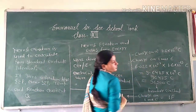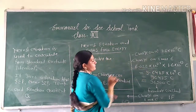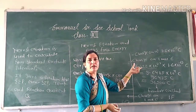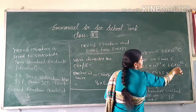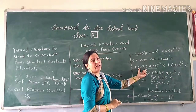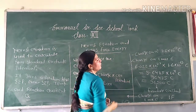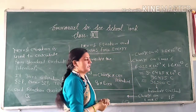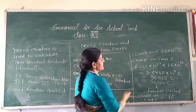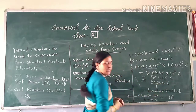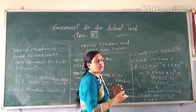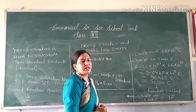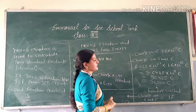So what is the charge on one mole of electrons? One mole of electrons: we multiply 1.6 × 10⁻¹⁹ coulombs by one mole of electrons — that is, by Avogadro's number. This gives us the charge on one mole of electrons, which is equal to 9.6485 × 10⁴ coulombs, which we can write as 96,485 coulombs, or approximately 96,500 coulombs.